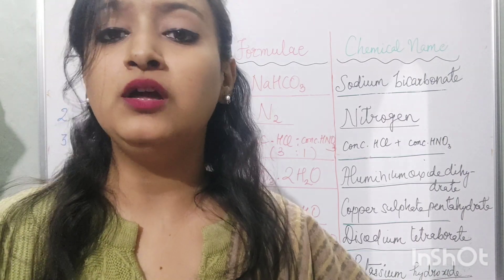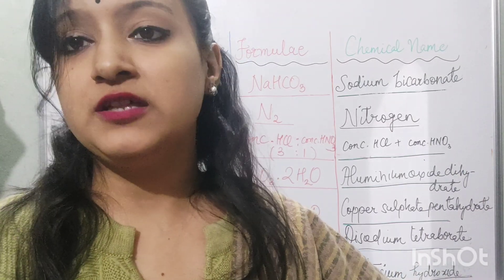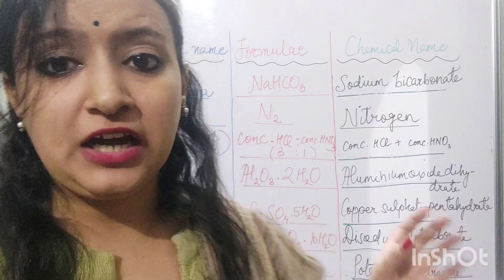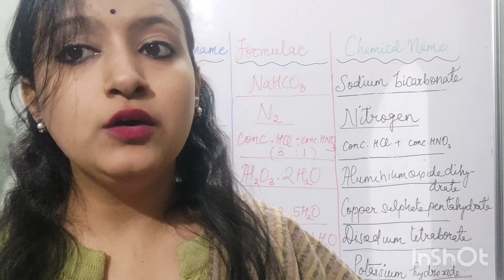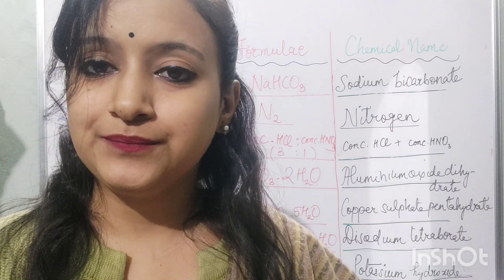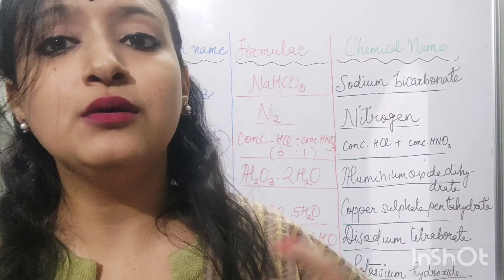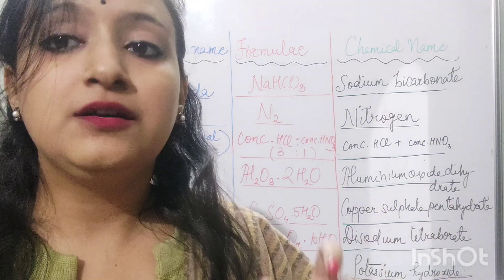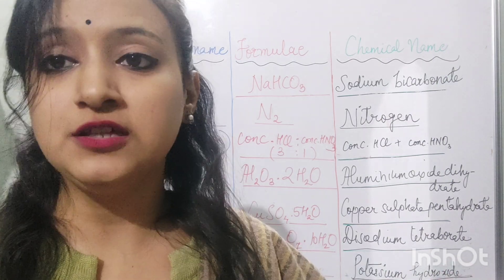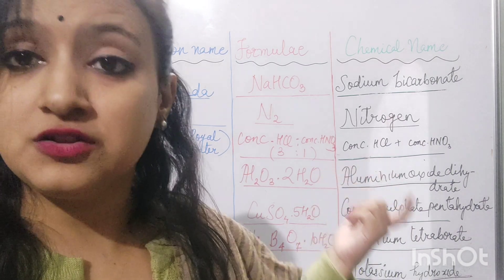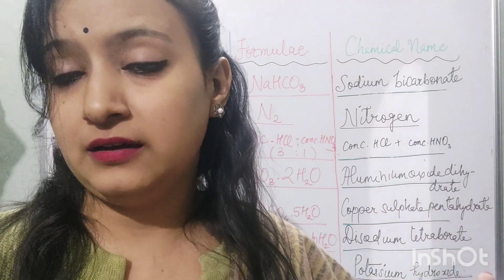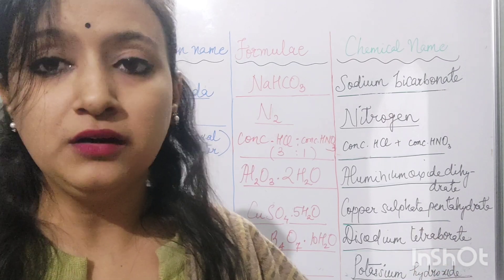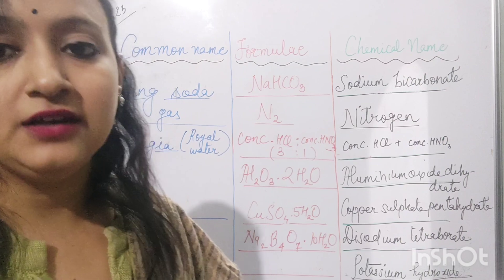The last compound is potassium hydroxide — a very important chemical compound. In the life processes chapter, you must have come across an activity where potassium hydroxide was used. Potassium hydroxide is a very good absorber of carbon dioxide gas and was used for that purpose in that activity listed in the NCERT biology chapters. Its chemical formula is KOH.